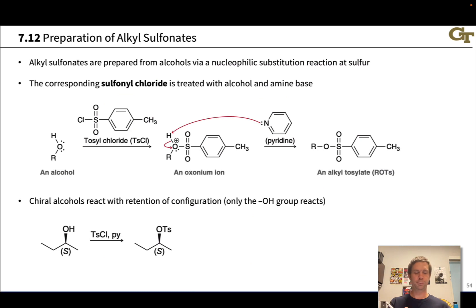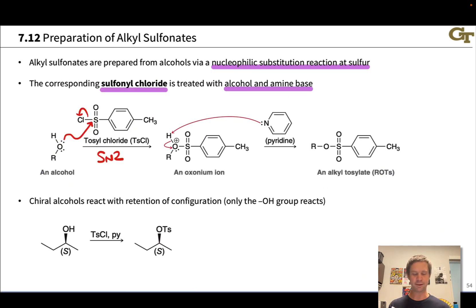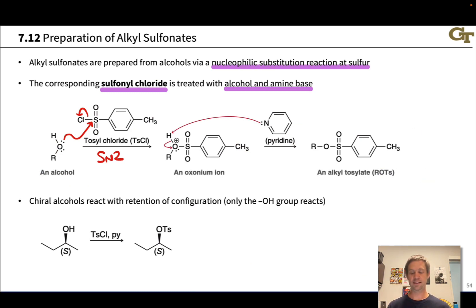Alkylsulfonates are typically made from the corresponding alcohol, where instead of the sulfonyl group we have just an H. Starting with ROH, the product is an alkyl tosylate (ROTs), so the toluenesulfonyl group replaces the H in the starting alcohol. This is accomplished via nucleophilic substitution at sulfur using a reagent with a good leaving group — chlorine — attached to sulfur, such that the nucleophilic oxygen displaces chloride in an SN2 step. Treatment with pyridine base removes the positive charge on oxygen, with pyridinium chloride as a byproduct that is washed away, leaving the desired alkyl tosylate.